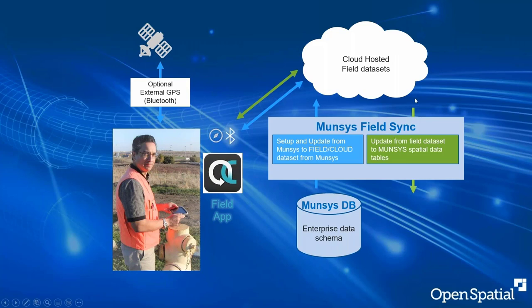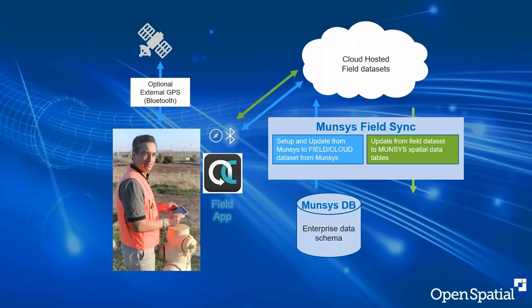We don't recommend doing it real-time. Instead, we recommend scheduling a sync once a day — at nighttime when there's not a lot of traffic — and pulling from the cloud back into the Munsis database. The reason is that with any number of users in the field, every change one person makes gets propagated to all other users if working live. A user could spend a lot of time just waiting for updates from everyone else. Working offline, then syncing when convenient, is much more efficient.